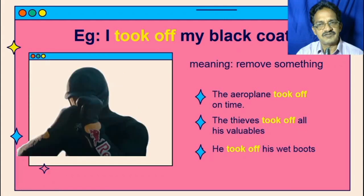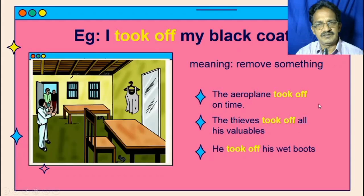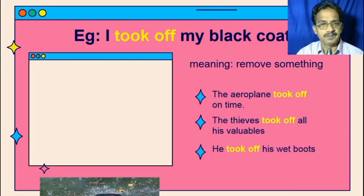Observe here — 'The thieves took off all his valuables.' See, when the doctor went out and came back with his friends, nothing was there in the room. The thieves took off — 'took off' means removed everything from the room. And 'he took off his wet boards' — that means off from the surface, from one place to another place.